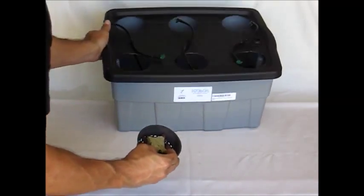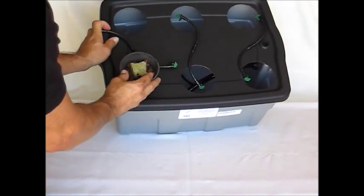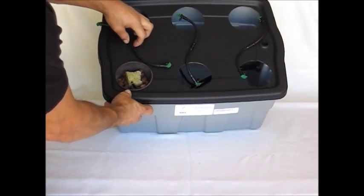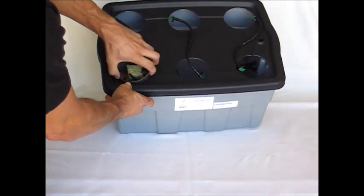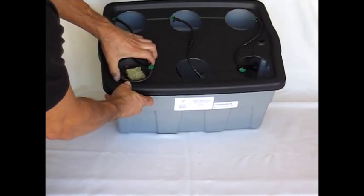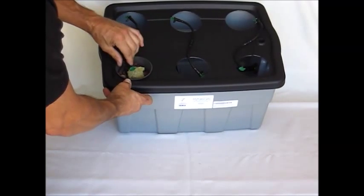From there we're going to install it into our reservoir. As you can see, the lines are going to go where they want to go. So you need to position your net cups and your stakes to hold these drip lines exactly where you want them to be.